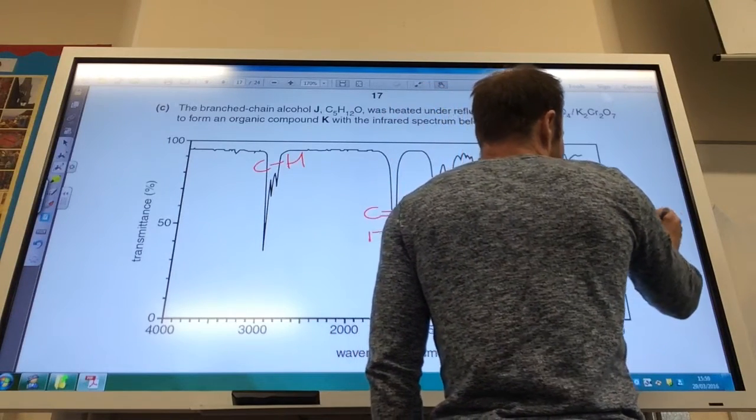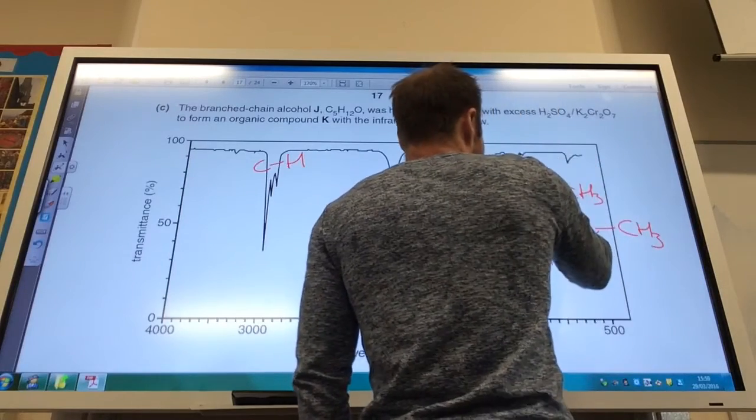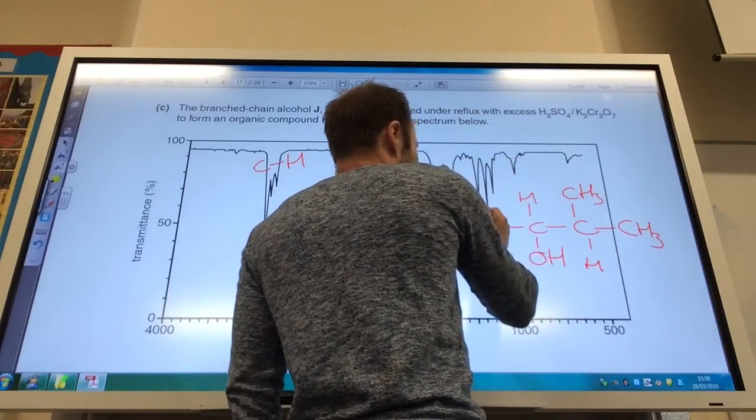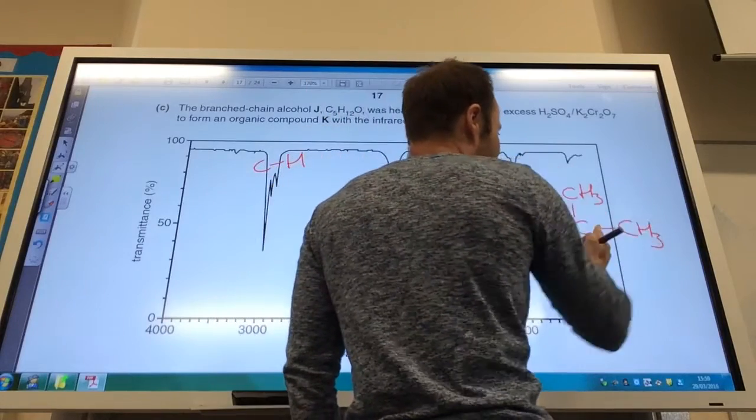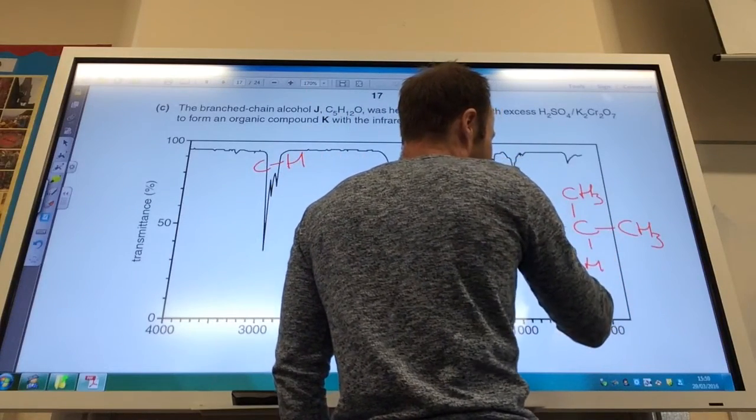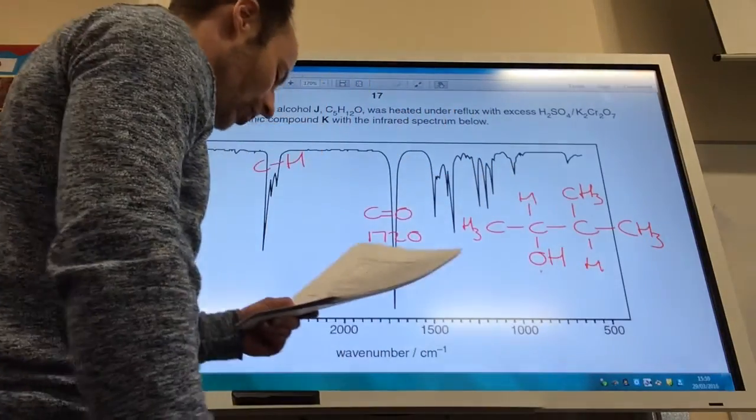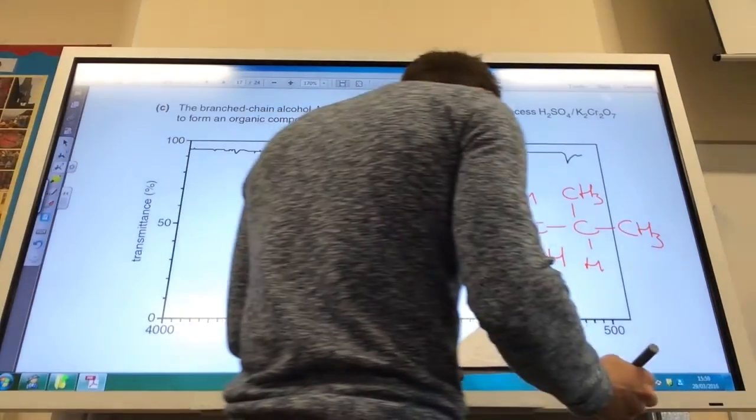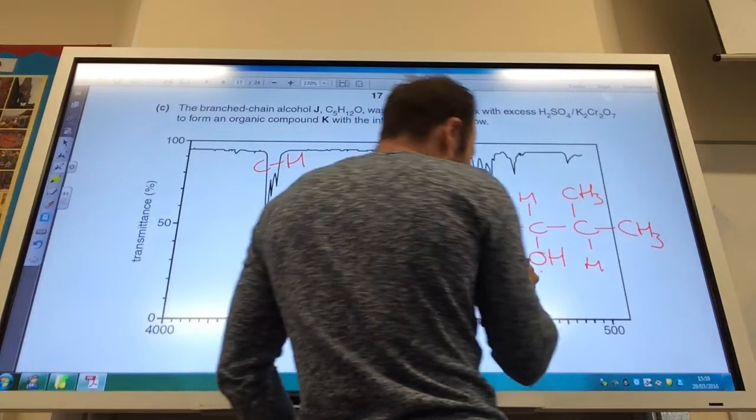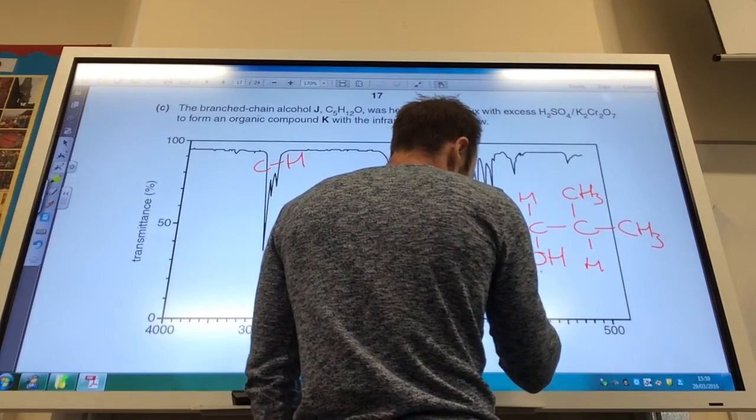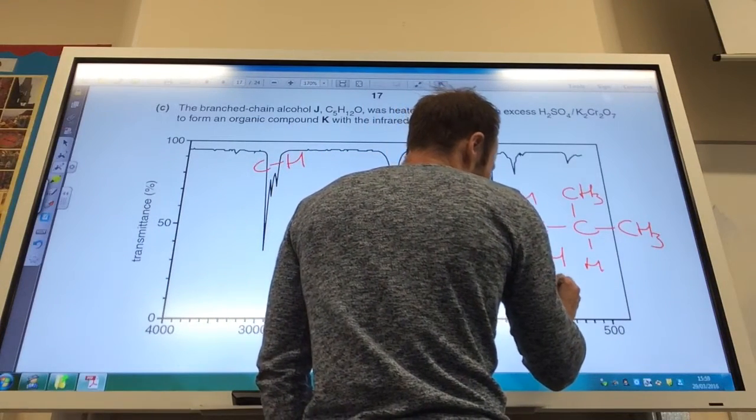Therefore, I've got to have it on the end. So, I've got four and then five carbons there. So, there we go. That has got to be my alcohol, like so. So, I've got four carbons in a row, one branch, and my alcohol must be coming off the other carbon to give me a secondary alcohol. So, therefore.